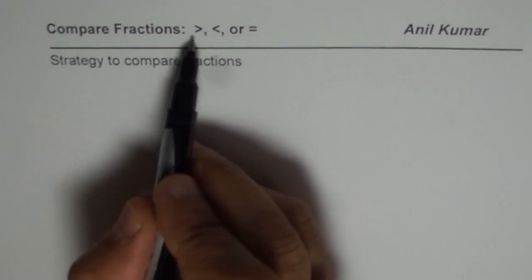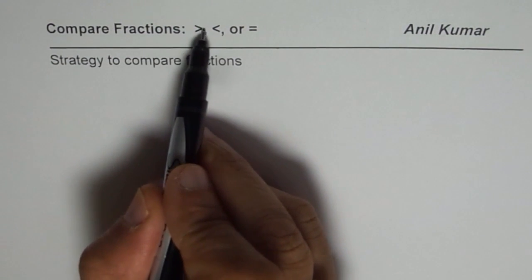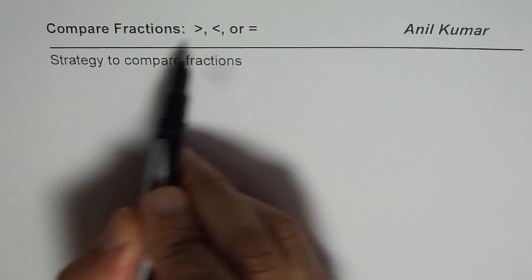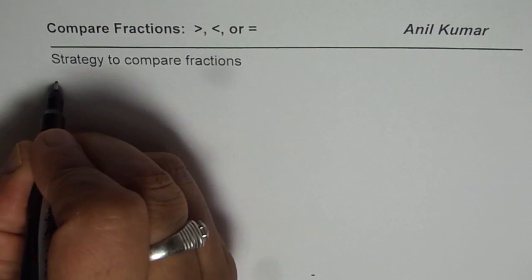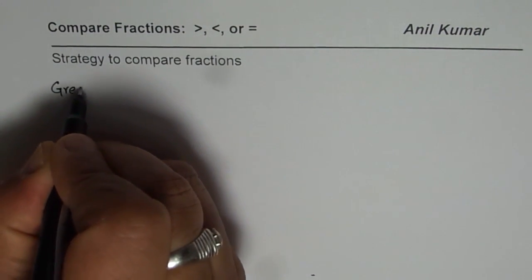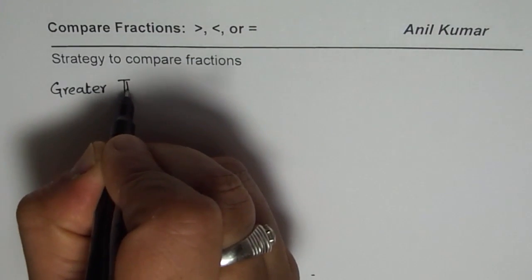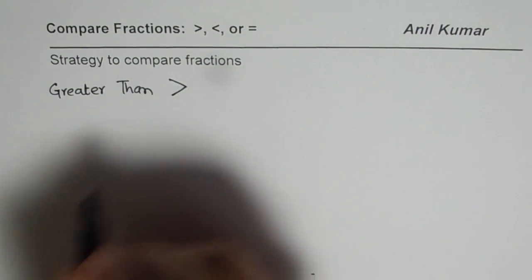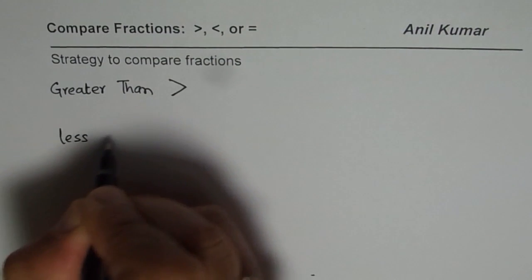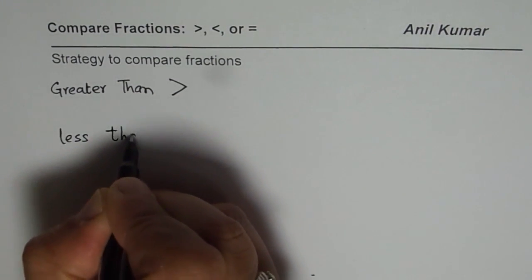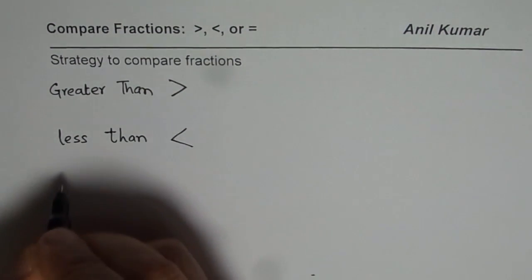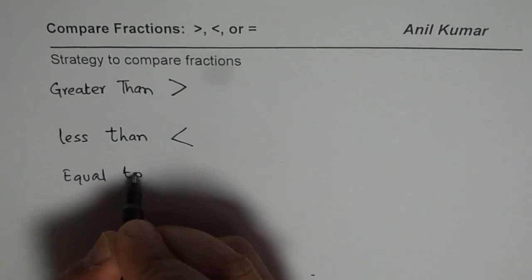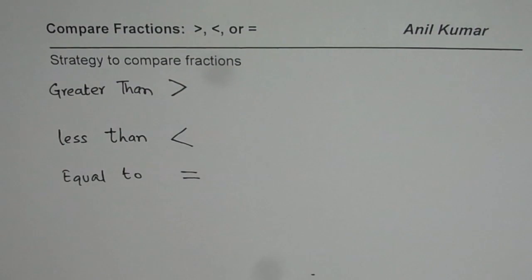Let us first understand these symbols. This particular symbol is for greater than, this is less than, and that is for equal to. Let me write them down. When we compare things we say greater than — that is the normal term. The symbol for greater than, less than, and equal to — this is the symbol for equal to.